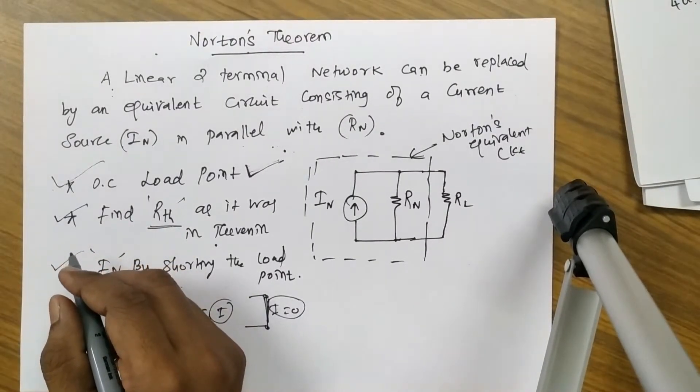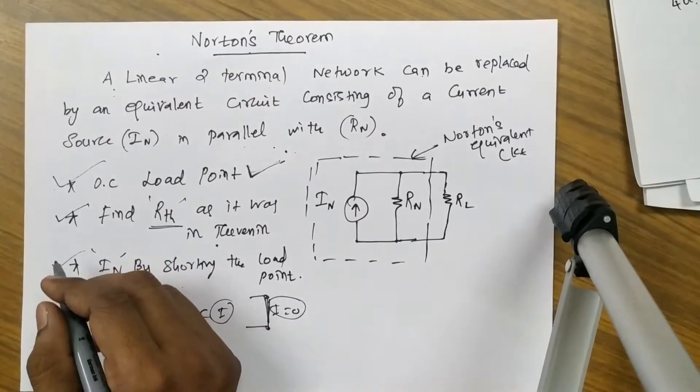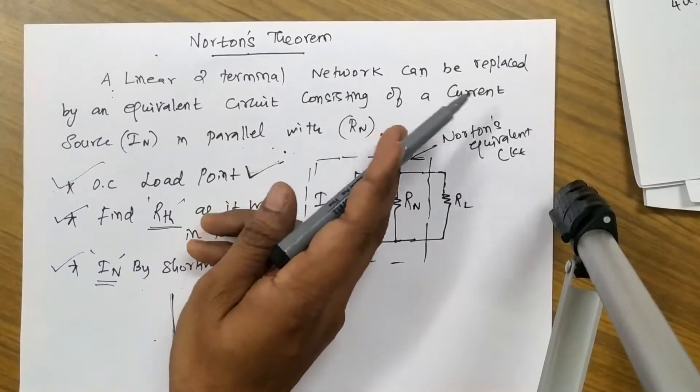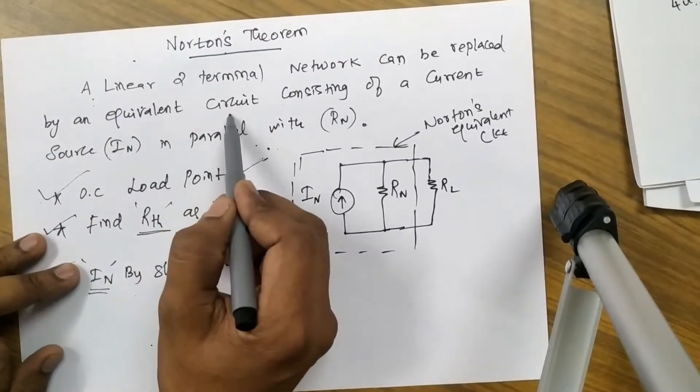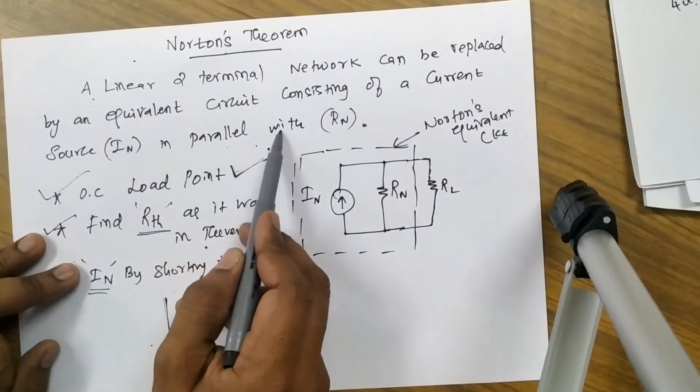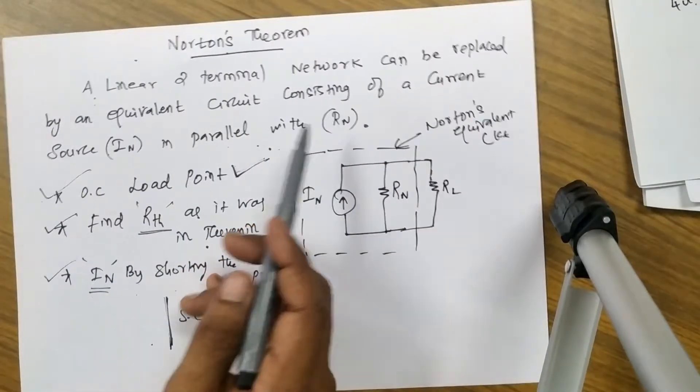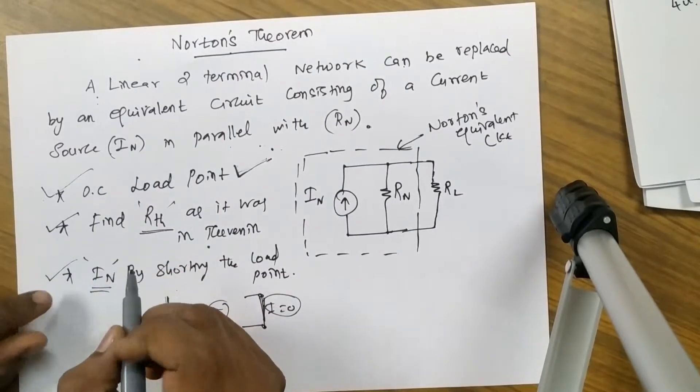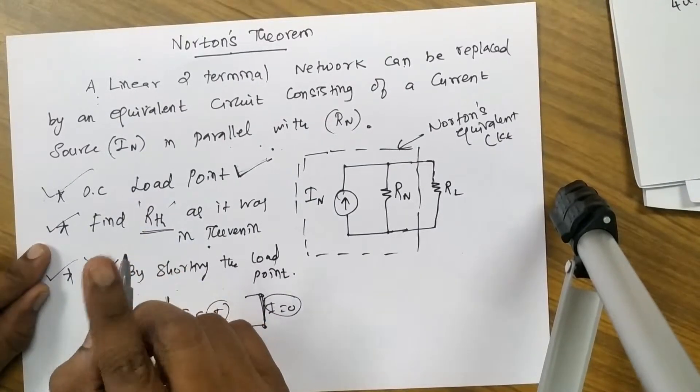Next theorem is Norton's theorem. What Norton's theorem says: a linear two-terminal network can be replaced by an equivalent circuit that consists of a current source in parallel with a resistance Rn. Does it ring a bell? Of course, it rings like a Thevenin's theorem.